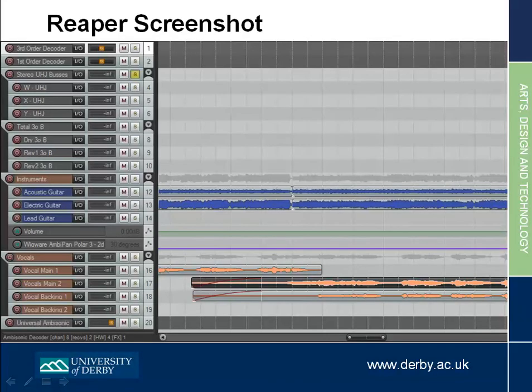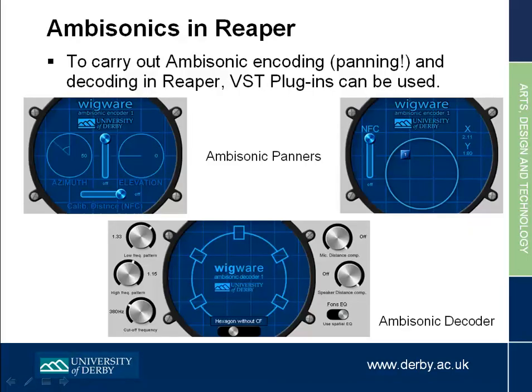Reaper is pretty much like every other DAW — horizontal, timeline-based editing. So the other bit we need for ambisonics in Reaper is: I've written a load of plugins which you can use to do the panning, the decoding, and also for a 3D reverb.